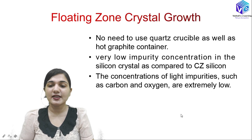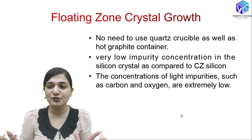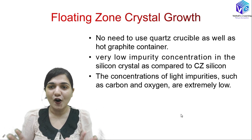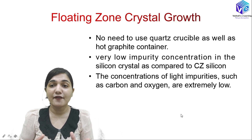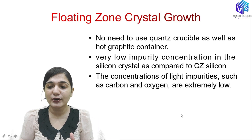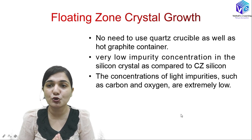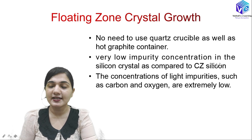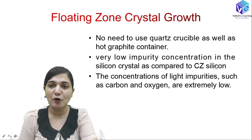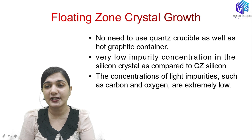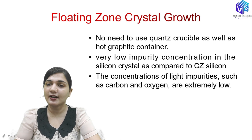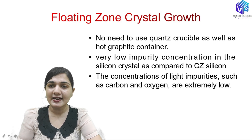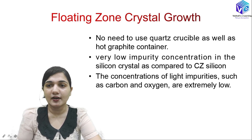In this method we do not require any quartz crucible or hot graphite container as used in the CZ process. It will have a very low impurity concentration, which is why it is used very effectively in power devices. In CZ silicon there is a higher amount of impurity — the oxygen and the carbon — that I have already discussed in its limitations.